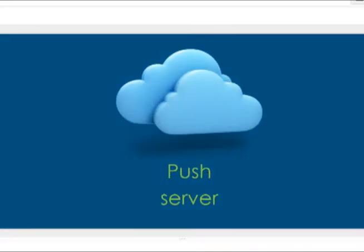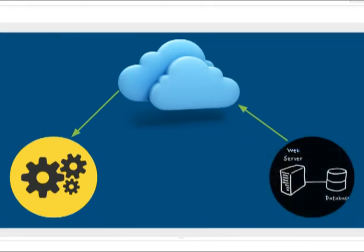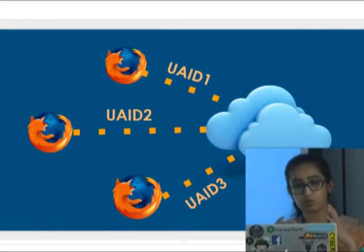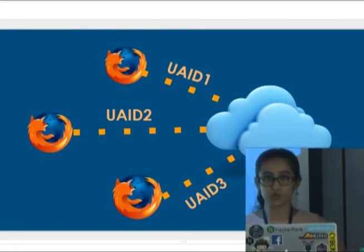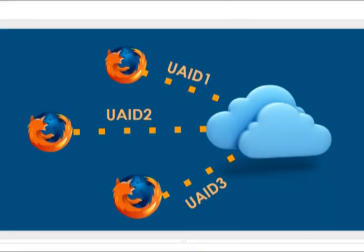The push server acts as the middleman between your web app server and your service worker, routing the payload between them. The push server uses a UAID — User Agent ID — to identify your browser. Each browser is associated with a particular UAID.